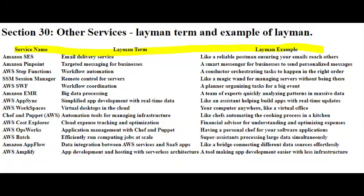Imagine you have a computer that you use for work, but sometimes you need to travel or use a different device. With AWS WorkSpaces, your computer isn't tied to one physical machine. It's like having a virtual computer that you can access from wherever you are. So, if you're at home, in a cafe, or at an airport, you can log in and find your desktop exactly the way you left it, with all your files and applications ready to go. It's like having your computer follow you around in the digital world, making it convenient for people who need to work on the go without worrying about carrying their physical computer everywhere.